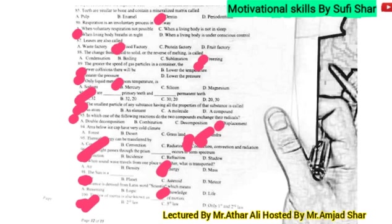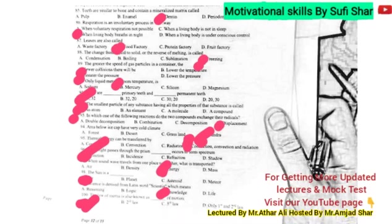Question 94 relates to biomes — including ice cap, very cold climate, desert, grassland, and tundra. The correct answer involves the tundra biome, which is covered in class 7 science.